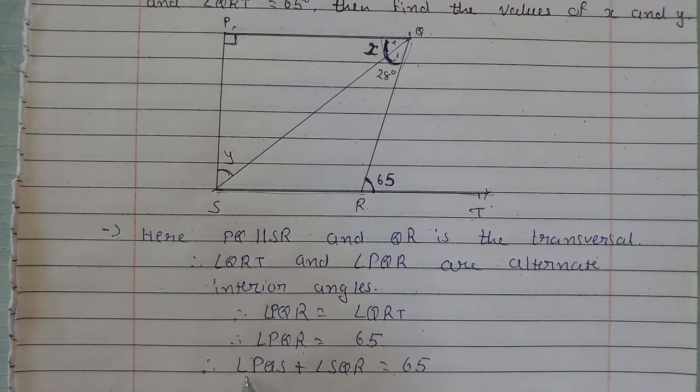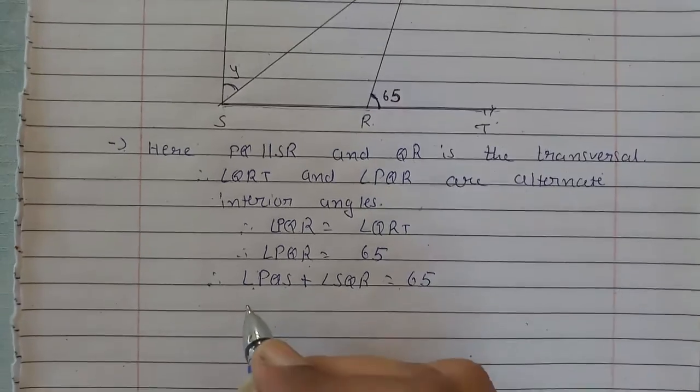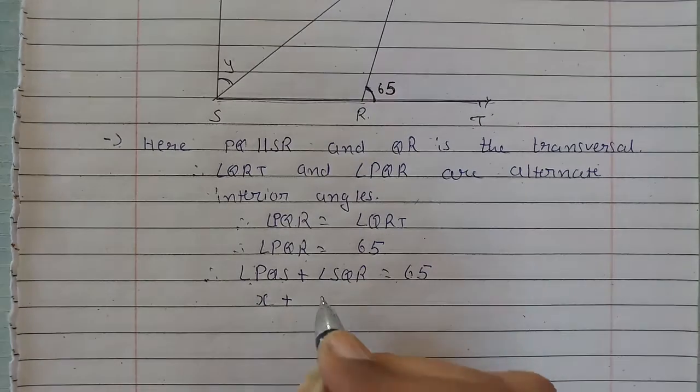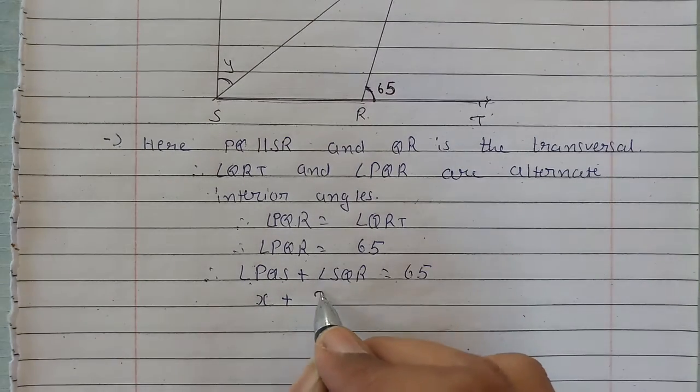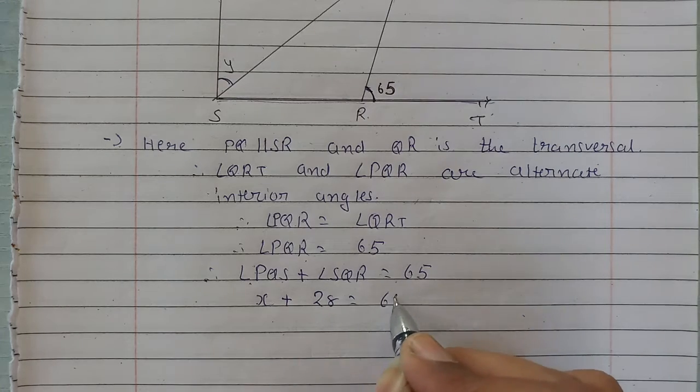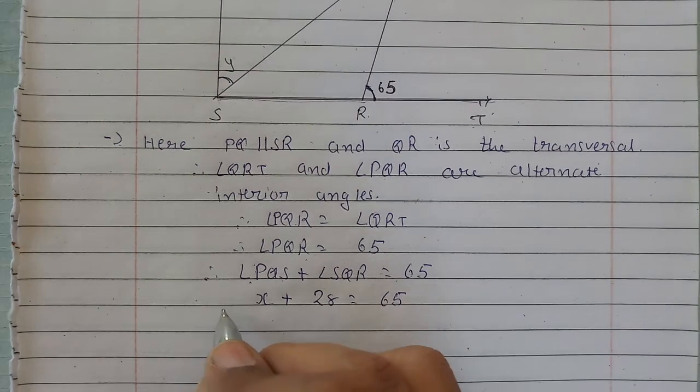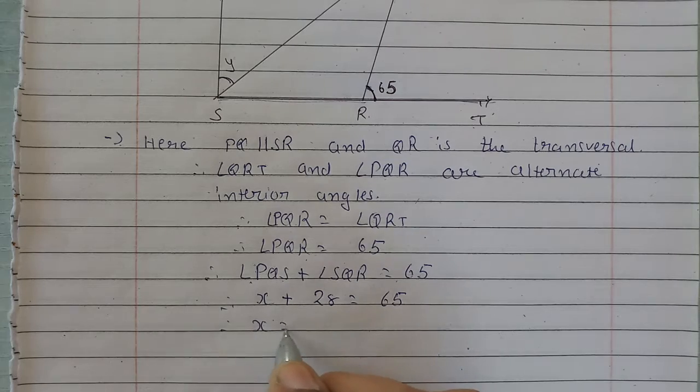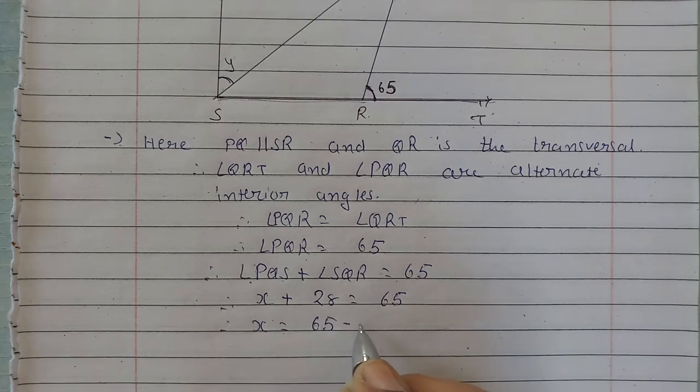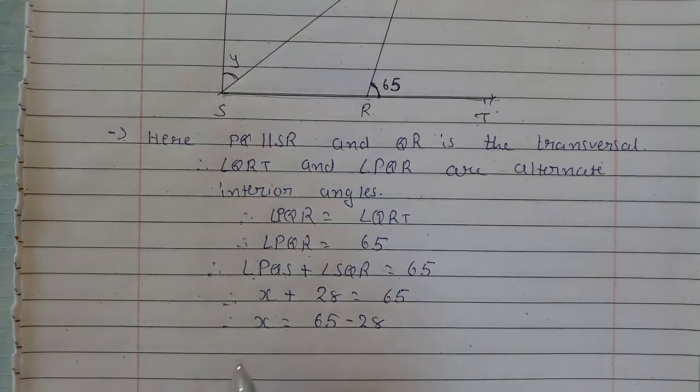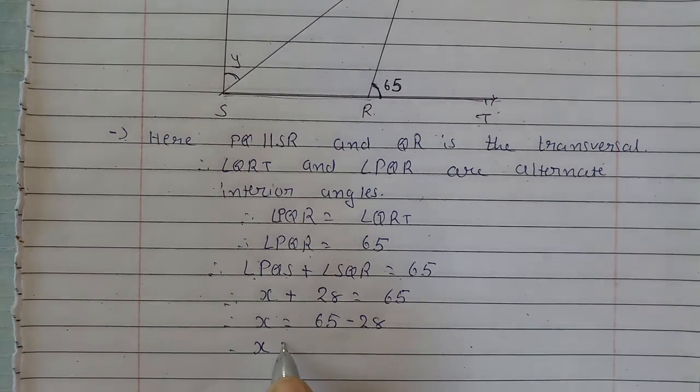In this, PQS is x, and SQR is 28, which equals 65. Moving 28 to the right side, x will be equal to 65 minus 28. So from this, x will be equal to 37.